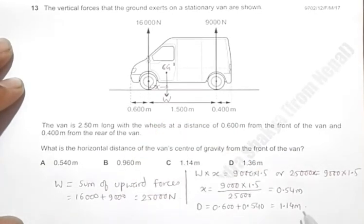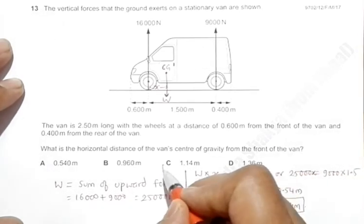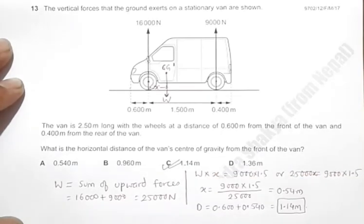So this point is 1.14 meters from the front end of the van. Our answer is choice C, so this is the correct choice.